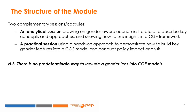Welcome to this module on how to use CGE models for gender-aware economic analysis. The module is composed of two separate but complementary sessions. The first session introduces concepts and analytical approaches drawing from a rich body of gender-aware economic literature, explaining why it is important to integrate a gender lens within a CGE framework and how to formulate CGE questions that can inform gender-sensitive policies. The second session uses a hands-on approach to describe the steps needed to build key gender-aware features into a CGE model and carry out a policy impact analysis.